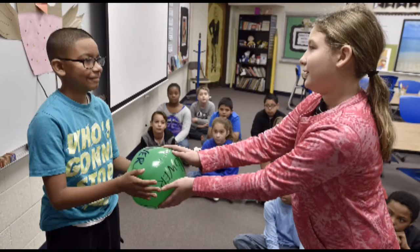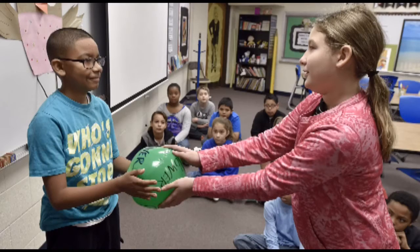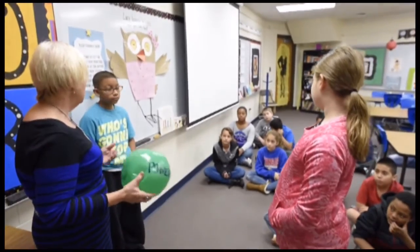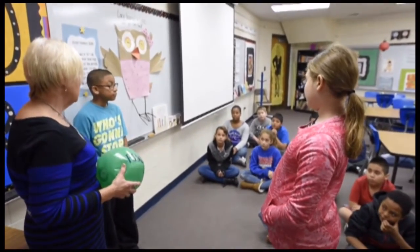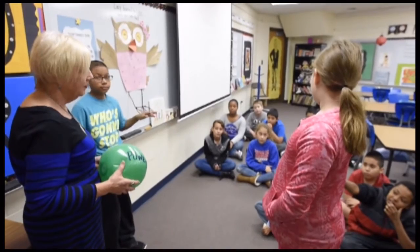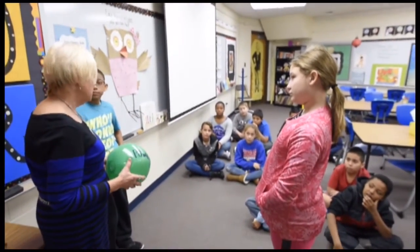In this morning's activity we talked about how bullying is about one person having power over someone else, and we used a power ball in a role play situation so that students could observe how in a normal conflict that power is going back and forth — it's shared between the two participants. In a bullying situation, the bully attempts to take the power from the other person and keep it.